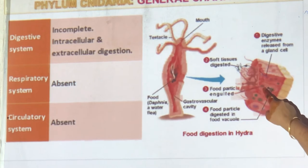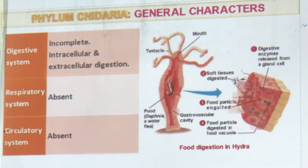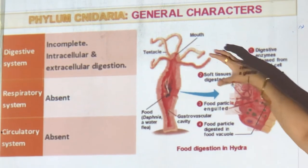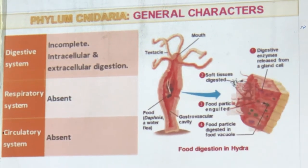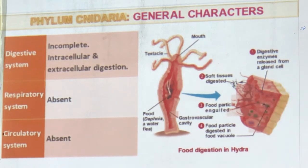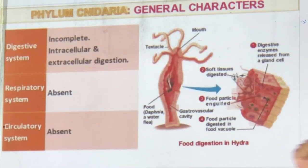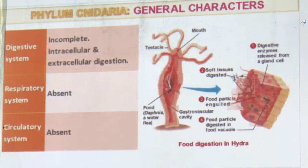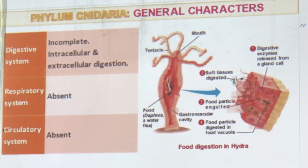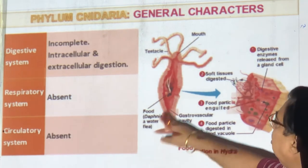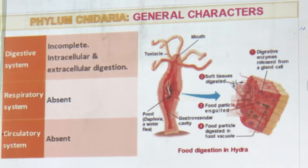Food is captured and enzymes are thrown out for extracellular digestion, and soft tissues are digested. The mouth closes and becomes a bag inside which digestion takes place. Enzymes are released inside. It can also take food inside the cell like an amoeba. It doesn't have a stomach, so the cavity itself acts as a stomach. This is how water fleas (Daphnia) are captured and digested.